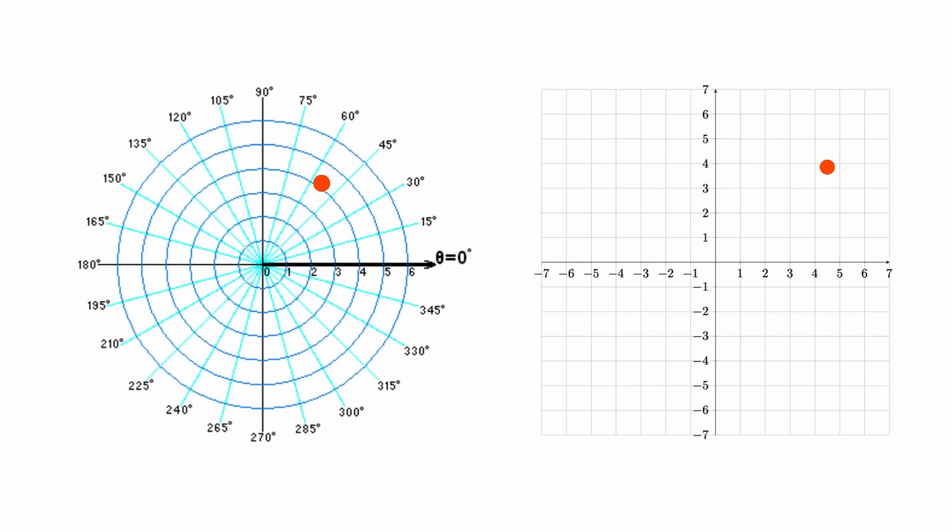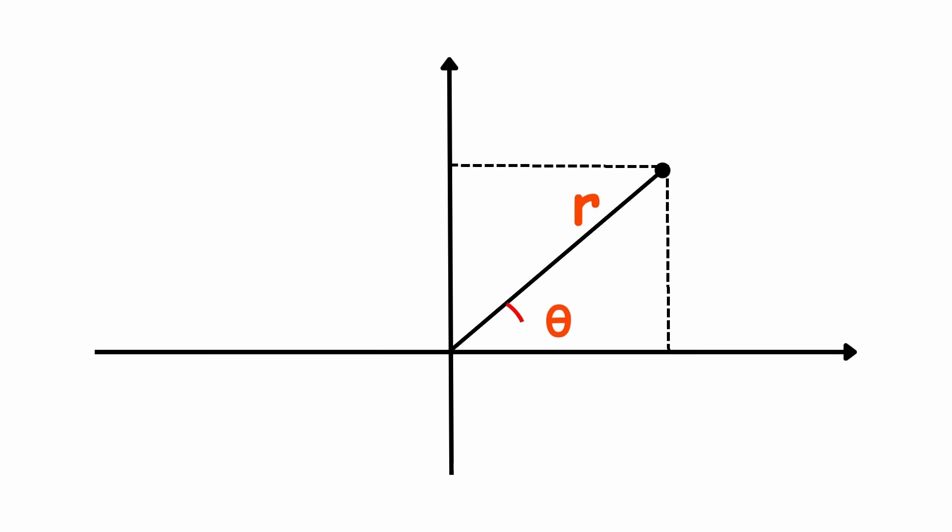The polar coordinate system is an alternative to the Cartesian system for locating points on the plane. Instead of using x, y, it uses two values: R equals the distance from the point to the origin, known as the pole. If it is negative, the point is reflected with respect to the origin.